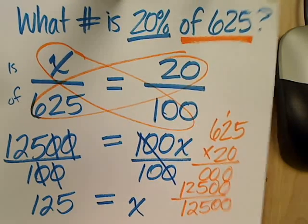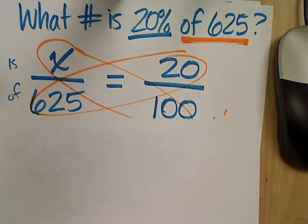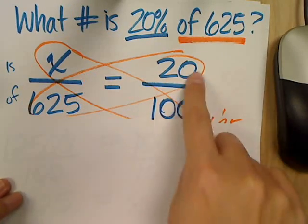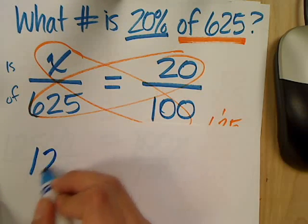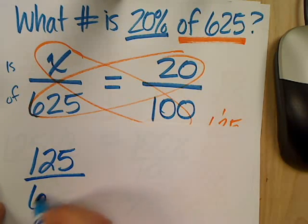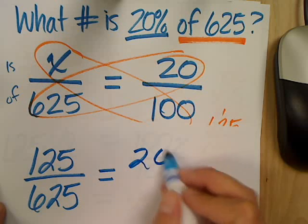Now, let me prove to you why this is the correct answer. If I take my original proportion here, and rather than writing an X, I write my answer of 125. It'd be 125 over 625 equals 20 over 100.